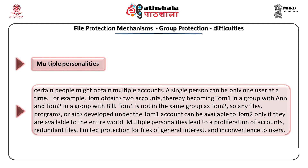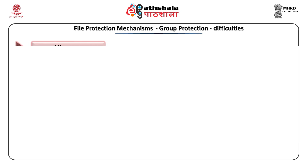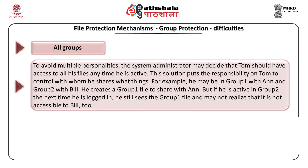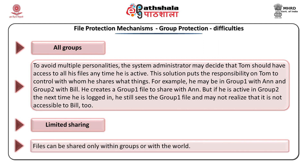With multiple personalities, the same person identified as Tom1 and Tom2 can proliferate accounts and redundant files. To avoid this, the system administrator may decide that Tom should have access to all his files anytime he is active, so Tom has to control with whom he shares what things. For example, in group 1 with Ann and group 2 with Bill, Tom creates a group 1 file to share with Ann. But if he is active in group 2 the next time he logs in, he still sees the group 1 file and may not realize it is not accessible to Bill. The third difficulty is limited sharing: files can be shared only within groups or with the world, but users want to be able to identify sharing partners for a file on a per-file basis.